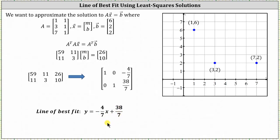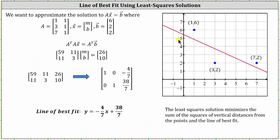Let's graph this line on the coordinate plane. This red line is the line of best fit using the least squares solution. The least squares solution minimizes the sum of the squares of the vertical distances from the points to the line of best fit. I hope you found this helpful.